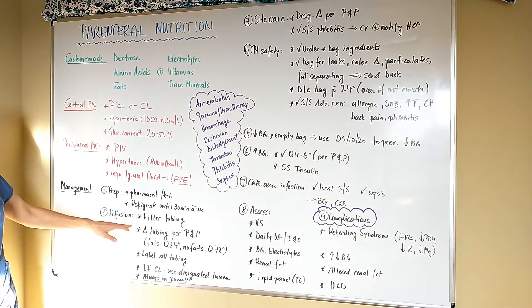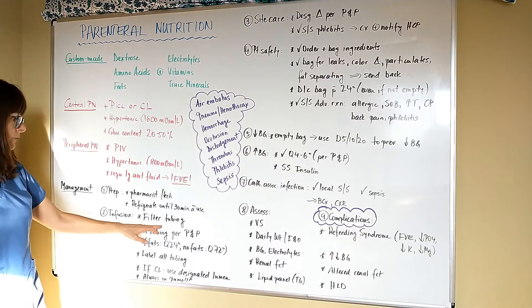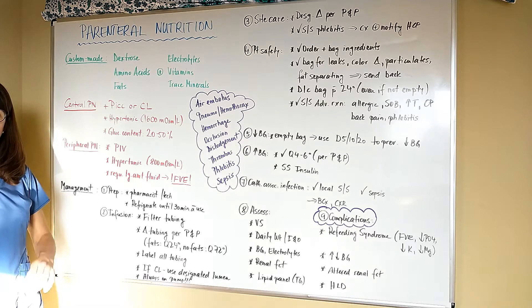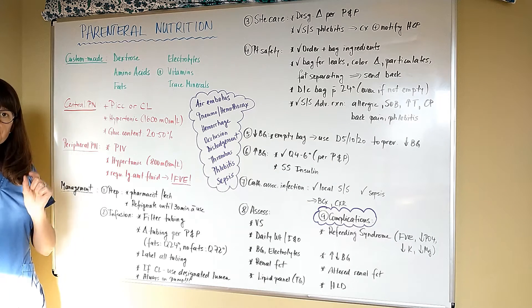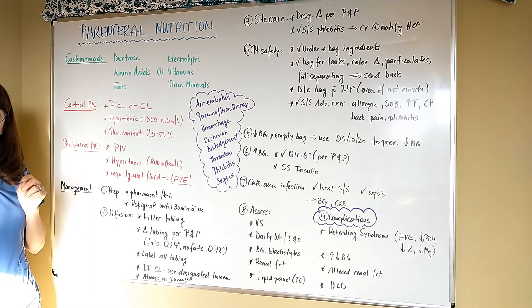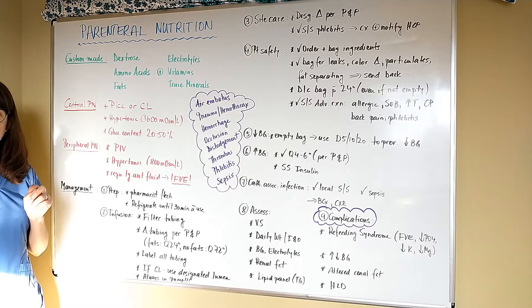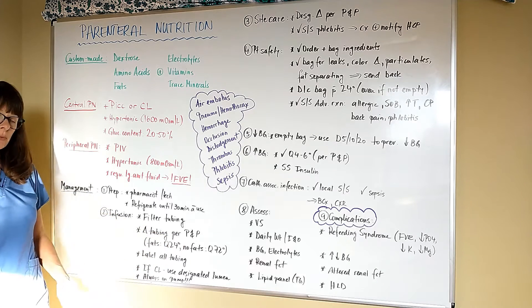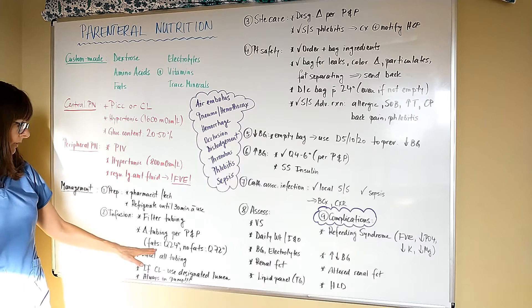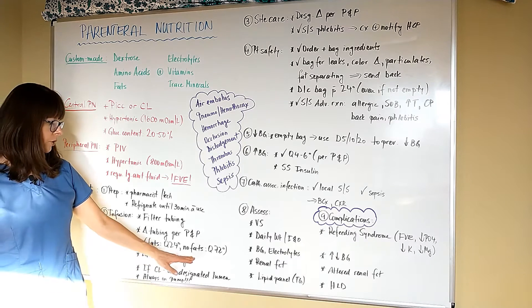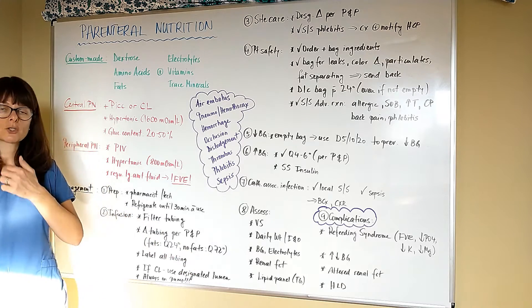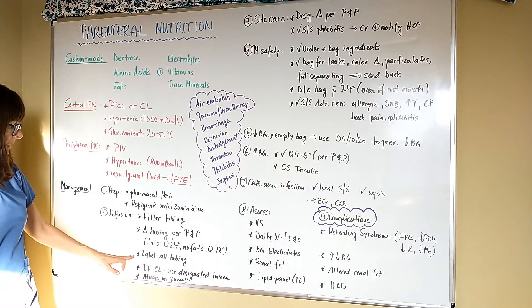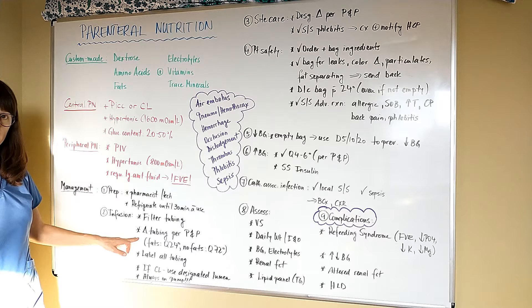Because these solutions can be very concentrated, a filter tubing is always required. I encourage you to always check with your facility's policy and procedure depending on the filter, the micron filters that you will need. Typically it is more of a filter requirement if fats are being administered because they are thicker solutions. The tubing has to be changed per policy and procedure. In general, the tubing when fats are administered can be changed every 24 hours. But if there are no fats, it can be changed every 72 hours. Check with the procedure and policy at the facility that you're at. All tubing has to be labeled so that we know when we have to change the tubing.